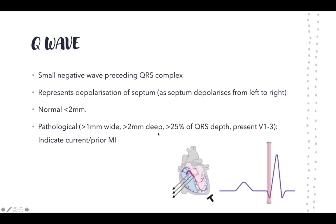If the Q wave is more than one millimeter wide, more than two millimeters deep, or more than a quarter of the QRS depth, and if it's present in V1 to V3, it's known as pathological and indicates a current or prior myocardial infarction or ischemia.